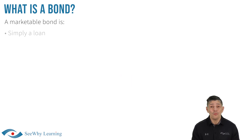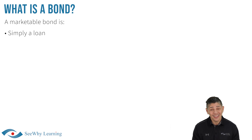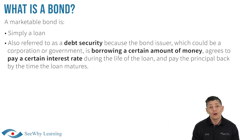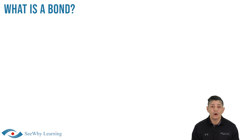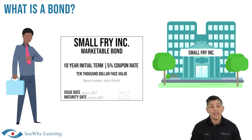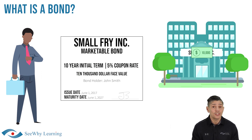A marketable bond is nothing more than a loan. In fact, it's also referred to as a debt security because the bond issuer, which could be a corporation or government, is borrowing a certain amount of money and agrees to pay a certain interest rate during the life of the loan and pay back the principal by the time the loan matures. For example, suppose Small Fry Incorporated issued a $10,000 face value bond. In layman's terms, it borrowed money and the bond certificate is evidence of that loan. On the other side of the transaction, the investor loaned money to Small Fry Inc. in exchange for a stated interest rate, which is usually a fixed rate.